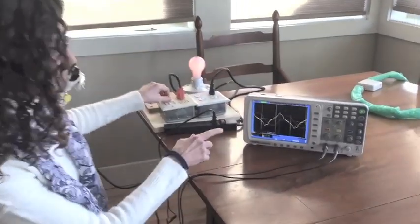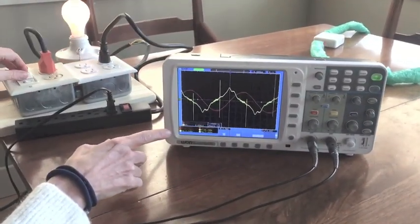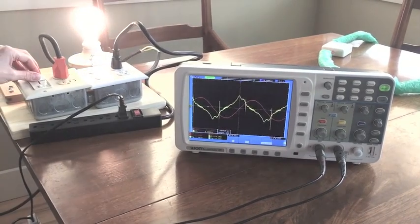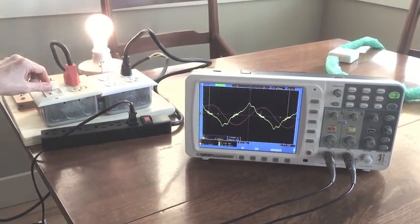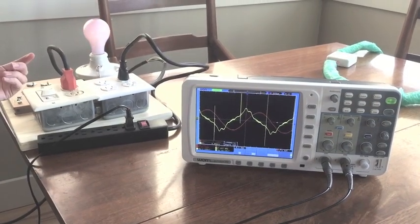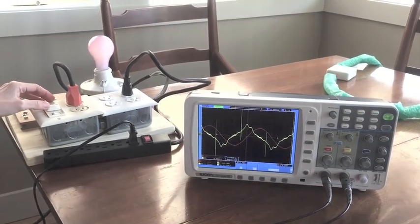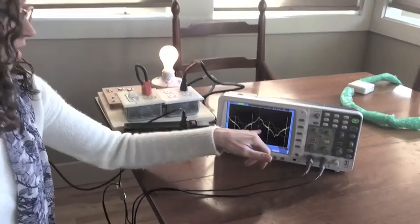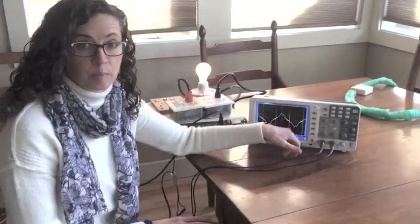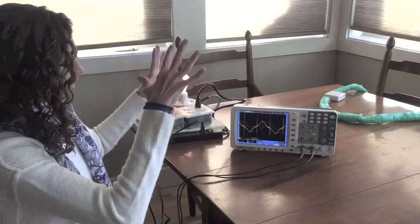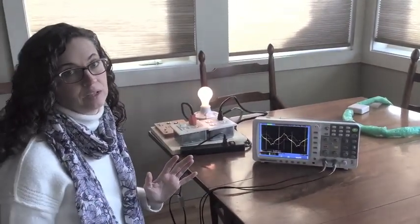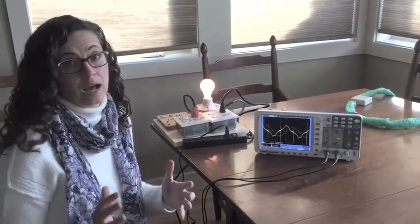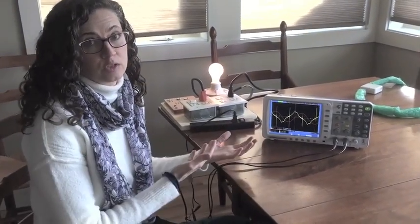Now look what happens when I move the dimmer up and down. So it doesn't necessarily matter if it's all the way up or all the way lower. It's still giving you a significant amount of dirty electricity. This is harmful, really harmful to your cells on a biological level. This is microsurge electrical pollution coming out into your space six to eight feet and your body does not know what to do with that. It has not evolved with these frequencies.